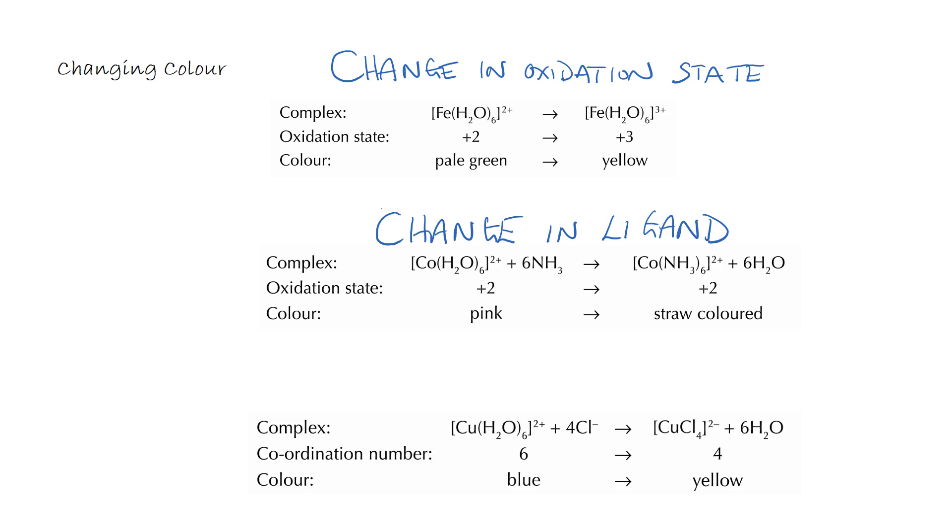The final example then. Here we've got a copper complex on the left and the right. The oxidation state remains the same. We're going from a blue colour to a yellow. We are seeing a slight change in ligand. We're going from water to CO- but importantly we are changing the coordination number of the complex here. And we're going from an octahedral shape to a tetrahedral shape. So these are the three reasons we may observe a change in colour in one of our complex solutions. We'll see these a lot more when we look at the reactions of metal-aqua-ions later on.